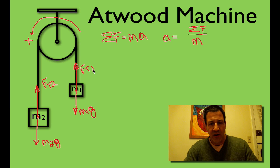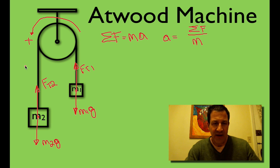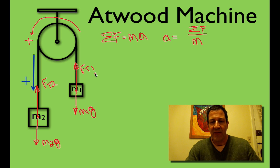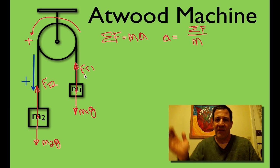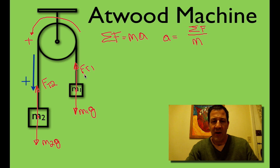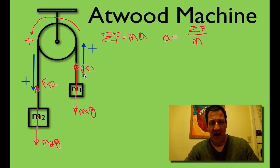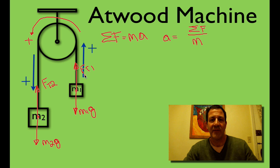Now, we called counterclockwise the positive direction. That means on the left-hand side, positive is downwards, and on the right-hand side, positive is upwards. You have to be a little careful here and visualize that. On the left-hand side, positive is downwards. On the right-hand side, positive is upwards — consistent with the counterclockwise rotation of the pulley.